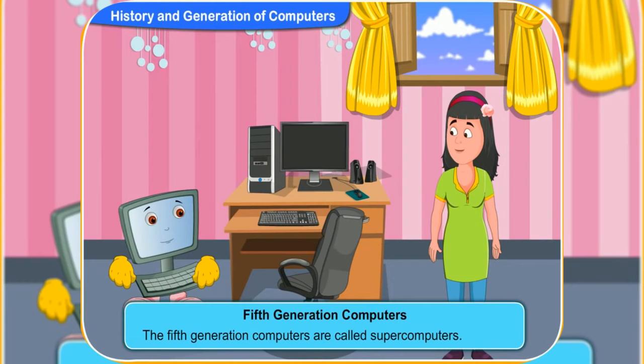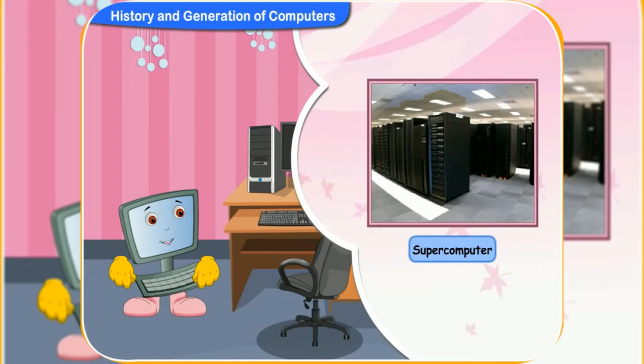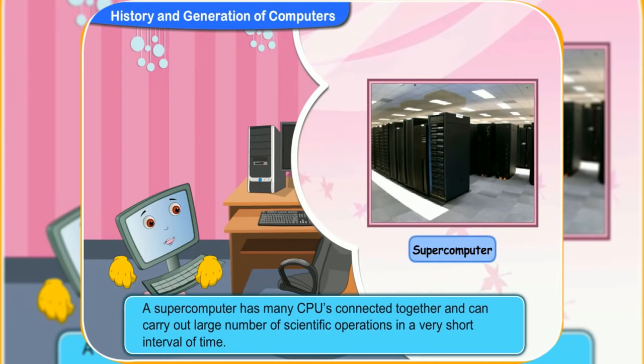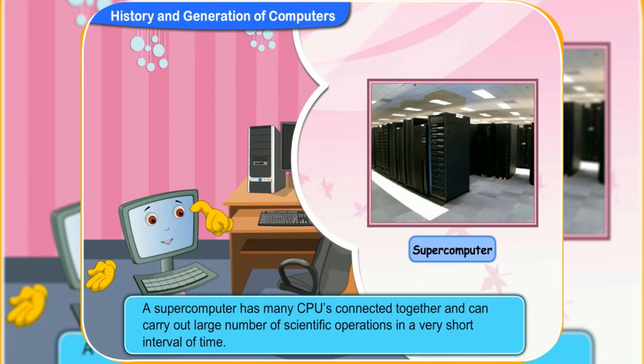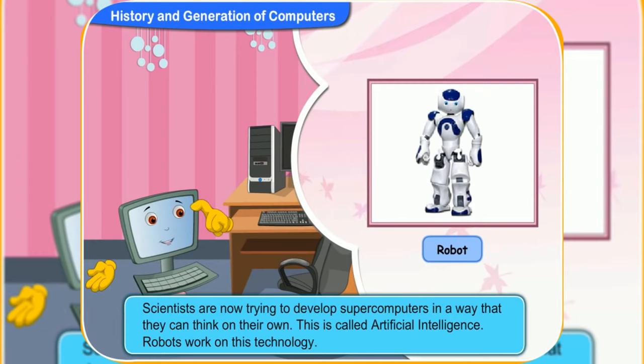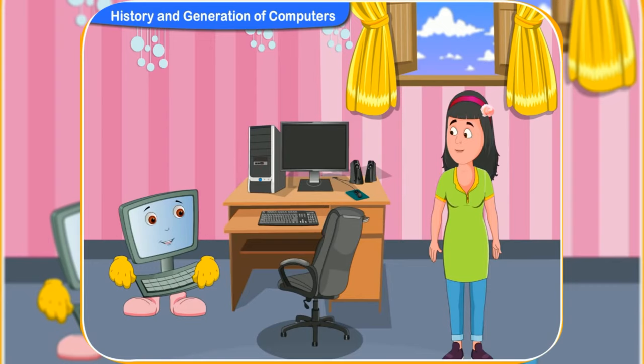Are there any further developments of computers? Yes — the fifth-generation computers are currently under development. They are called supercomputers because they have high storage capacity, speed, and efficiency. A supercomputer has many CPUs connected together and can carry out a large number of scientific operations in a very short interval of time. Scientists are now trying to develop supercomputers that can think on their own — this is called artificial intelligence. Robots work on this technology.